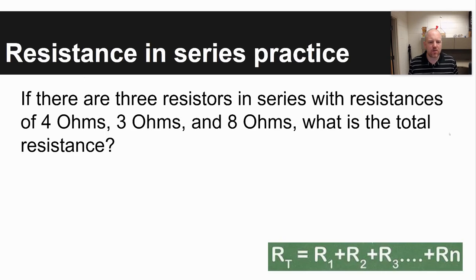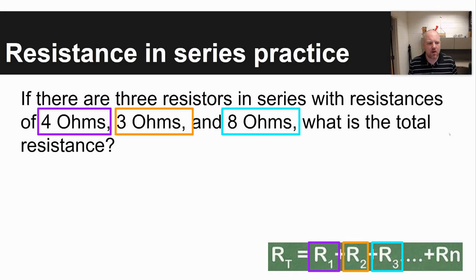To go through an example of this, it says if there are three resistors in series with resistances of four ohms, three ohms and eight ohms, what is the total resistance? What you do here is first identify the resistance that's given to you in a problem. And you'd use this equation because it says that these components are in series.